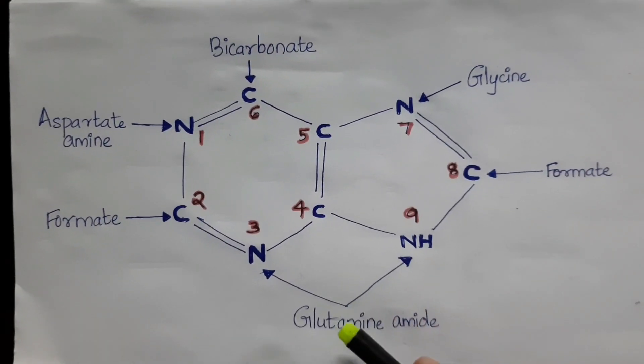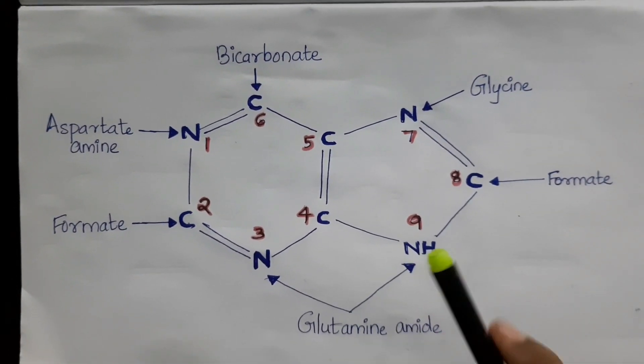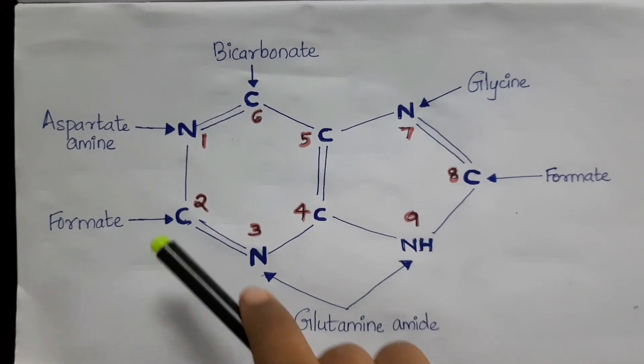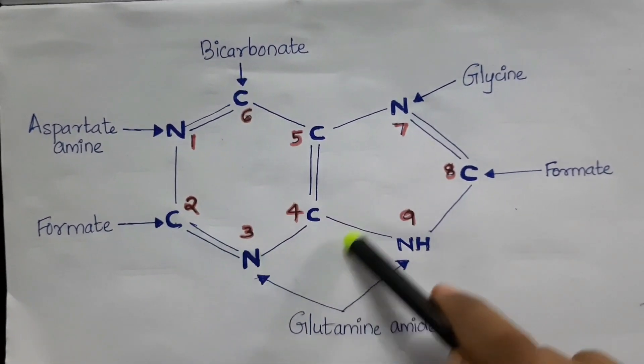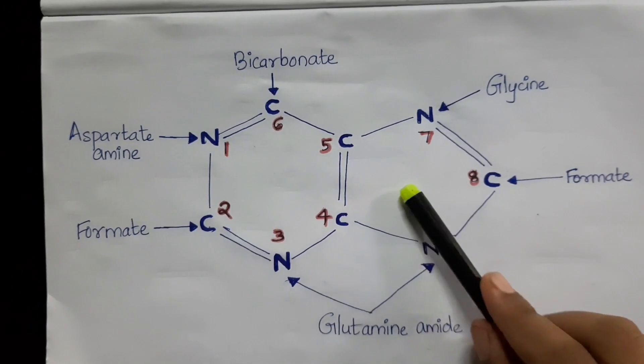But now, let's see the most important thing which you have to memorize for exams. Let's see from where purines and pyrimidines get their carbons and nitrogens. Let's see what are the different sources of the carbons and nitrogens that are present in a purine.